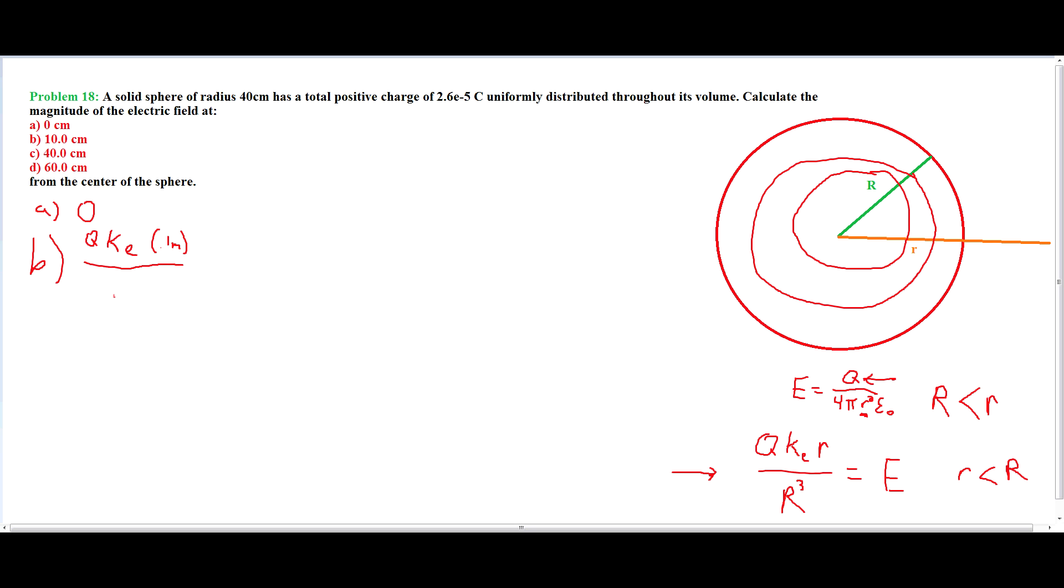divided by 0.4 meters cubed. And that is equal to 3.65 times 10 to the 5th newtons per coulomb. And for C, we use the same equation down here. And we get q ke times 0.4 meters...